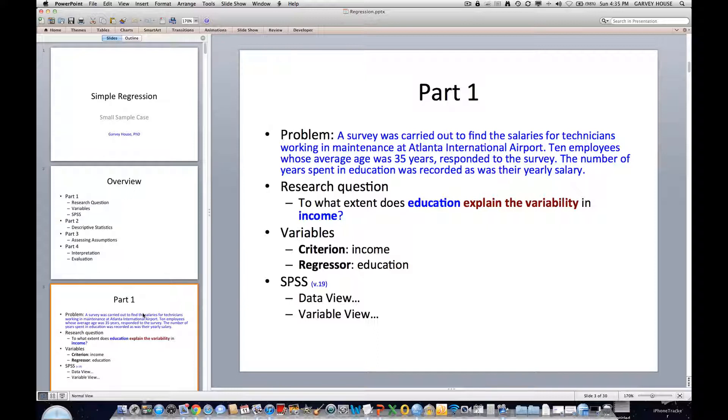There are two variables in this analysis. The criterion variable, also known as the dependent variable, which is income. And then the regressor variable, also referred to as independent variables, is education.